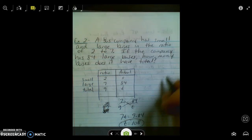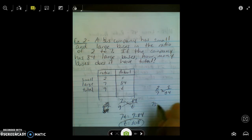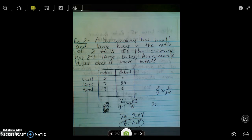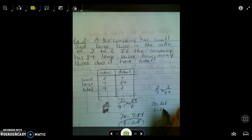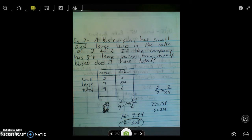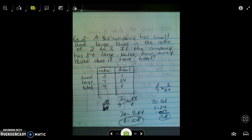Again, as we talked, you could have done this. Small to large, small to large. We know there are 24 small buses, and then 24 plus 84 is 108. So I found the number of small buses, added it to the number of large buses. Another way we could have found the same answer.